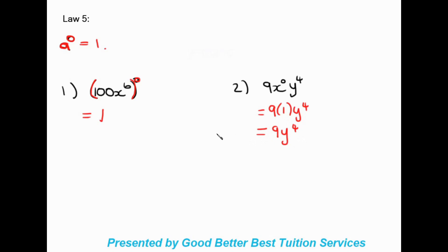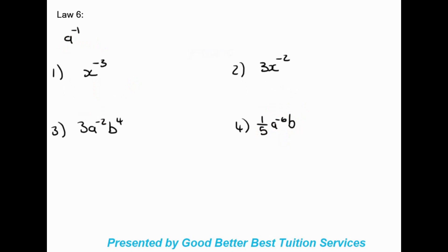Law number six: a to the power of negative one. When something is raised to a negative power, it flips over. So a to the negative one over one becomes one over a — the a moves to the bottom and the negative one becomes a positive one.